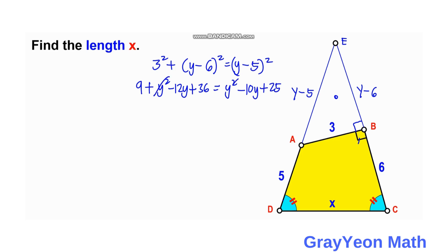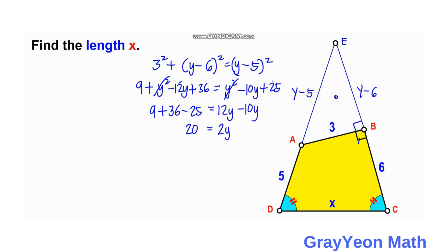We cancel Y² from both sides, leaving 9 + 36 − 25 = 12Y − 10Y. This simplifies to 20 = 2Y, and dividing both sides by 2 gives us Y = 10 units.